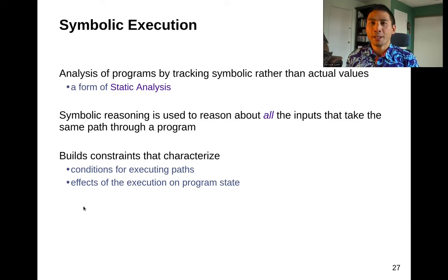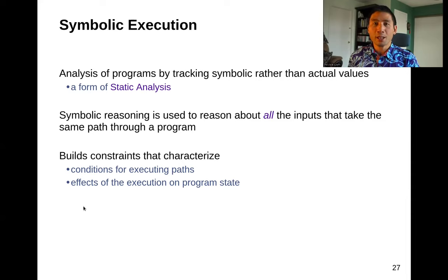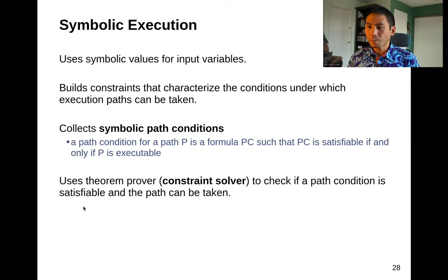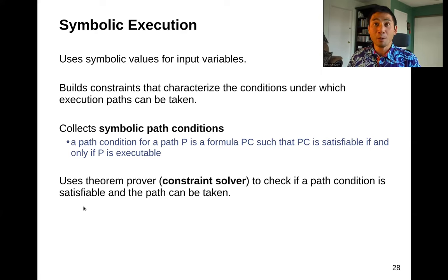What we're doing is symbolic execution — analysis of programs by tracking symbolic rather than actual values. This is a form of static analysis. We run the program through and it's kind of dynamic, but it's based on static analysis. The symbolic reasoning is used to reason about all the inputs that take the same path through the program. We're building constraints that characterize conditions for executing paths and the execution effects on the program state.